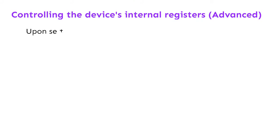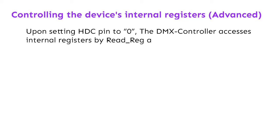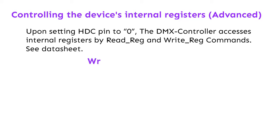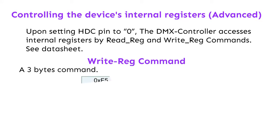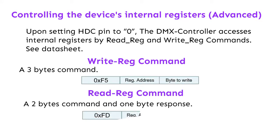To control the device's internal registers, upon setting the HDC pin to 0, the DMX controller accesses the internal registers using read-reg and write-reg commands. The write-reg command is a 3-byte command, and the read-reg command is a 2-byte command. See the datasheet for full details.